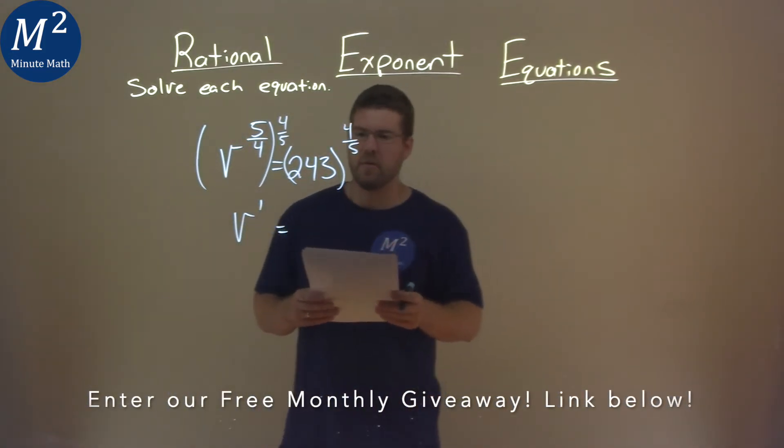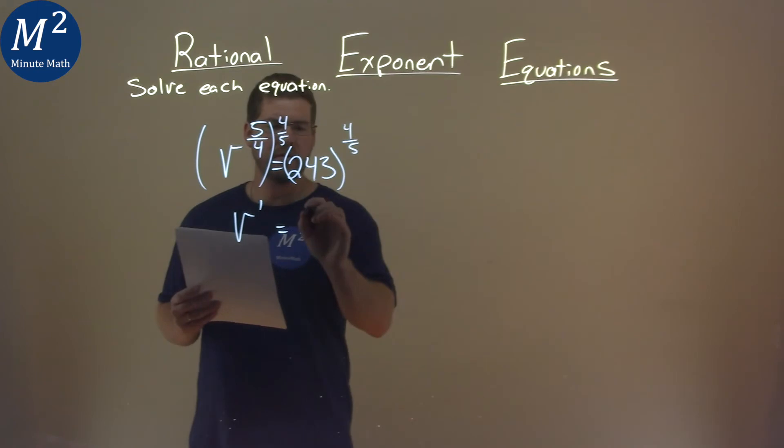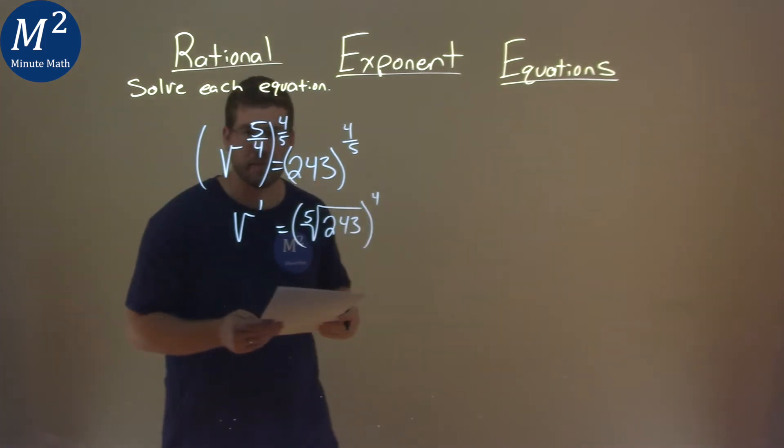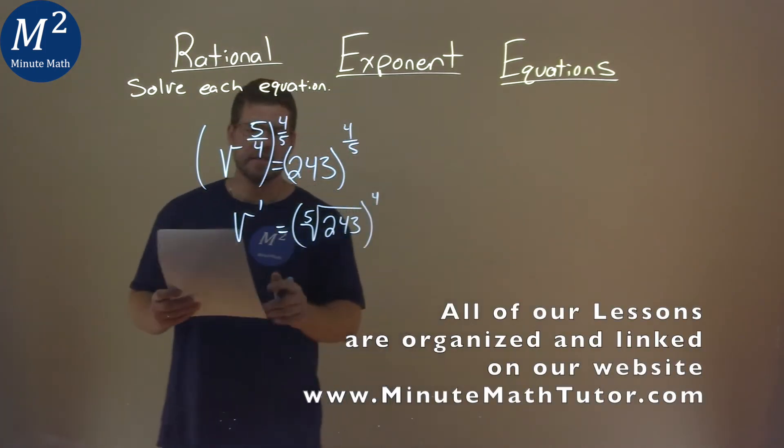Now, 243 to the 4 fifths power is a little tricky. This is the same thing as the fifth root of 243, all of that raised to the 4th power. So, let's keep on going here.